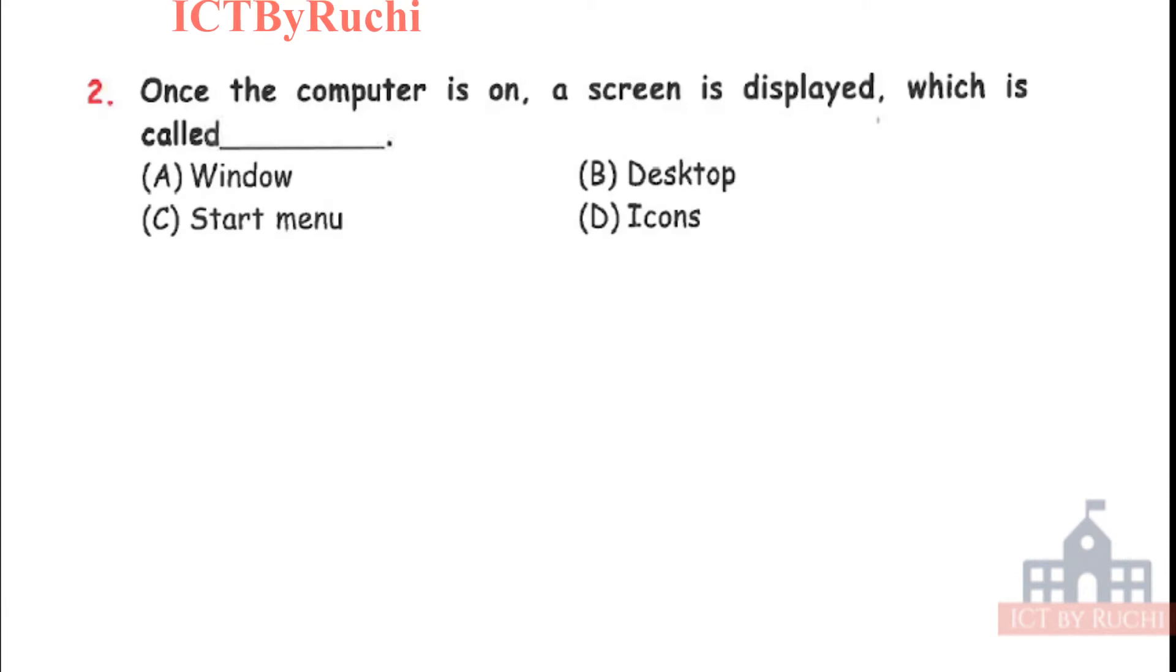Second question. Once the computer is on, a screen is displayed which is called: A. Window, B. Desktop, C. Start menu, D. Icons. Answer is B. Screen with icons, taskbar and start menu is called a desktop. That means when the computer is on, the first screen which is visible to us is desktop.